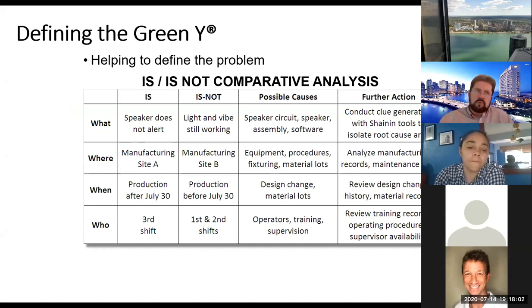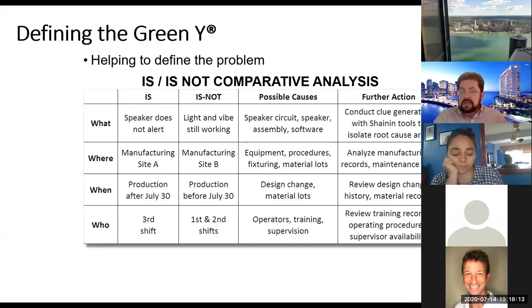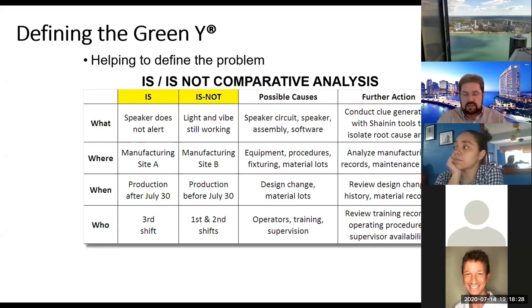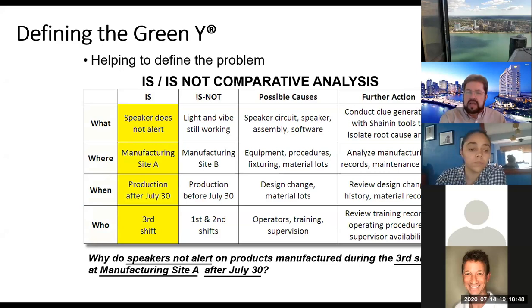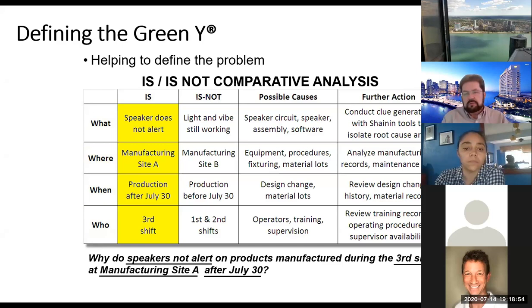One of the things you'd start with in Shannon is an Is/Is Not comparative analysis. Some of these tools are shared with Six Sigma. Using an Is/Is Not comparative, you're looking at what is and what is not. For example: the speaker does not alert, but the light and vibration are still working. You look at who, what, where, and when. If you're putting a problem statement together, you'd say: 'Why did the speakers not alert on products manufactured during the third shift at manufacturing site A after July 30th?' Pulling all the information together to isolate it. Shannon believes in quickly getting to the matter and excluding things that are not involved — so we're not looking at shifts one or two, not looking at stuff before July 30th, not looking at manufacturing site B.